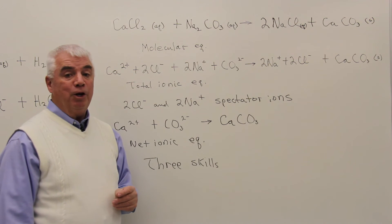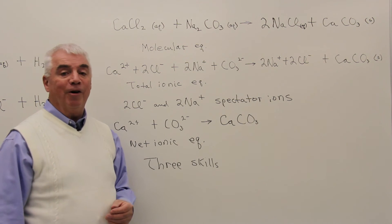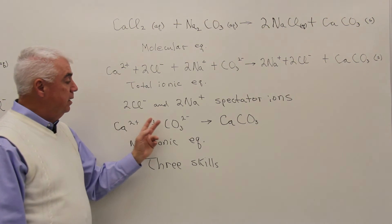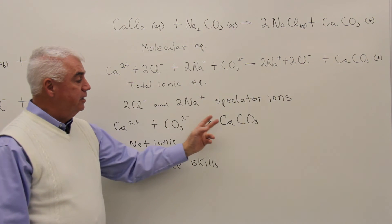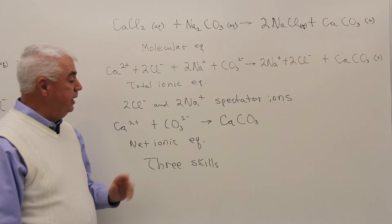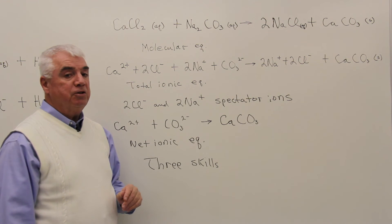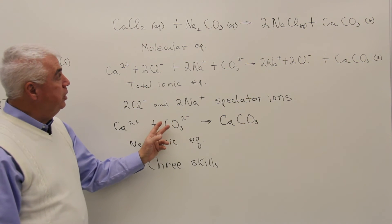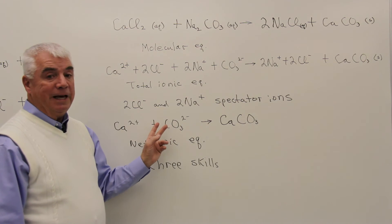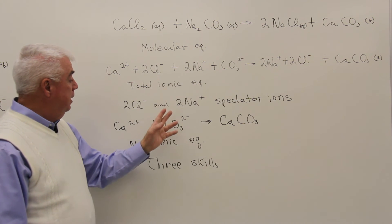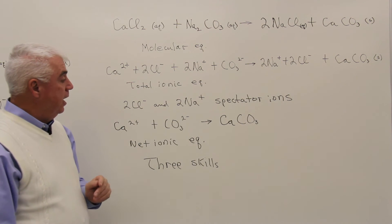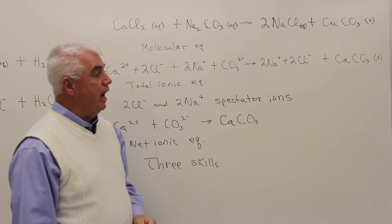Net ionic equations are pretty useful. They're sort of like a generic reaction. What this really says is that any source of calcium plus any source of carbonate is going to form calcium carbonate. Knowing a net ionic equation, we can predict lots and lots of reactions. For example, we use sodium carbonate as the source of carbonate, but we could have used potassium, or lithium, or ammonium, various carbonates and produce the same reaction.